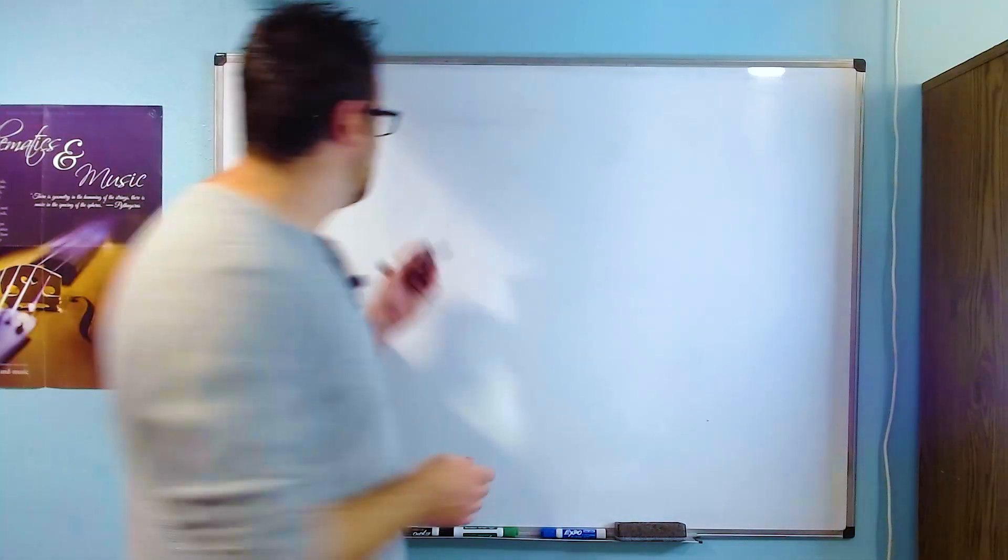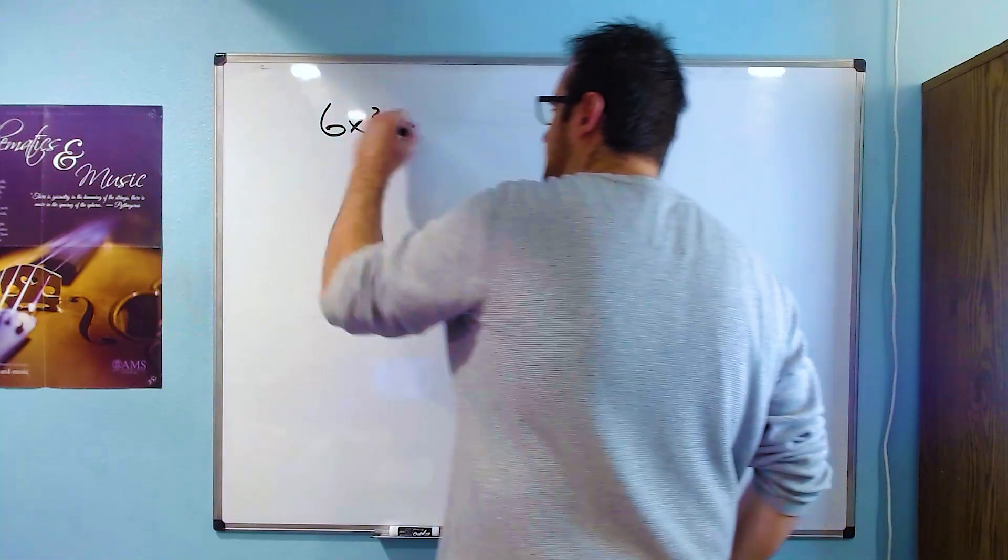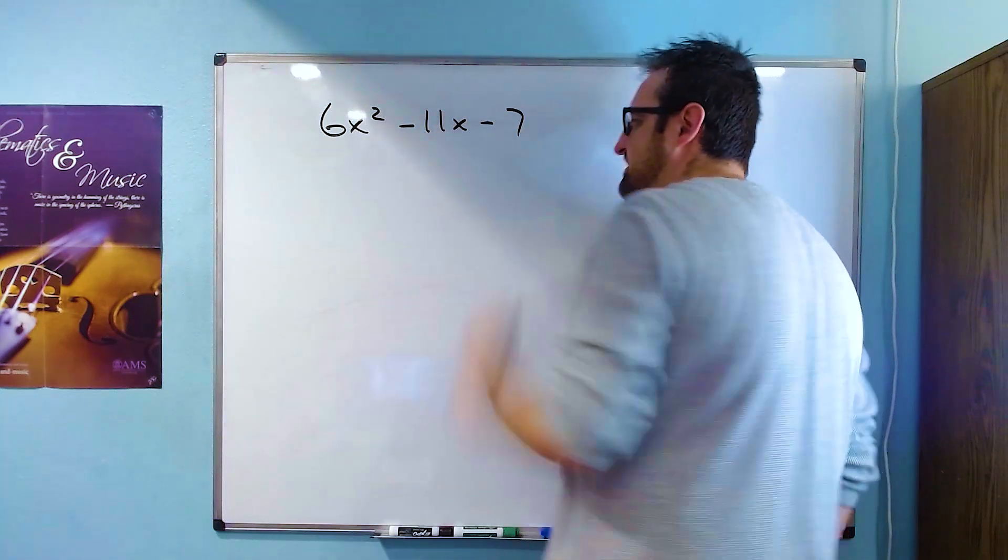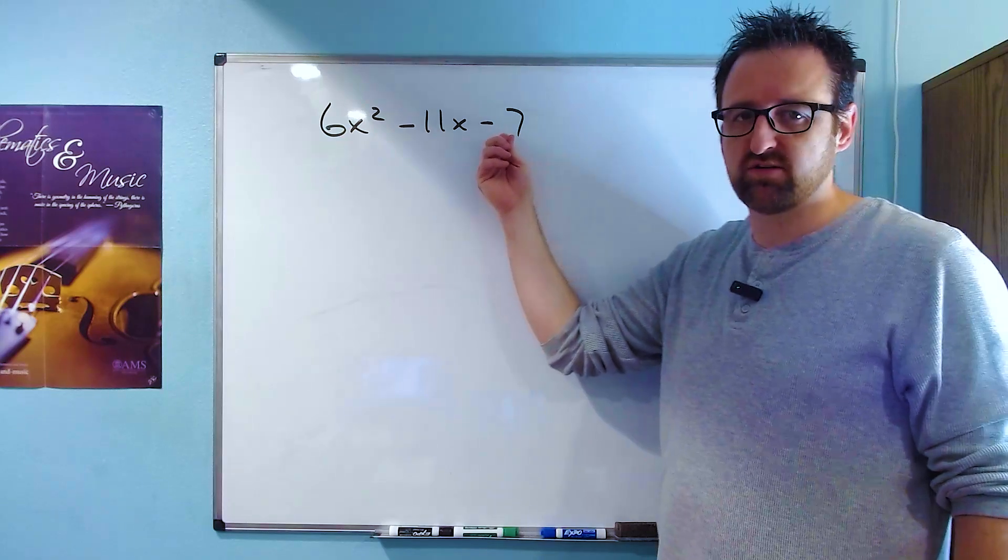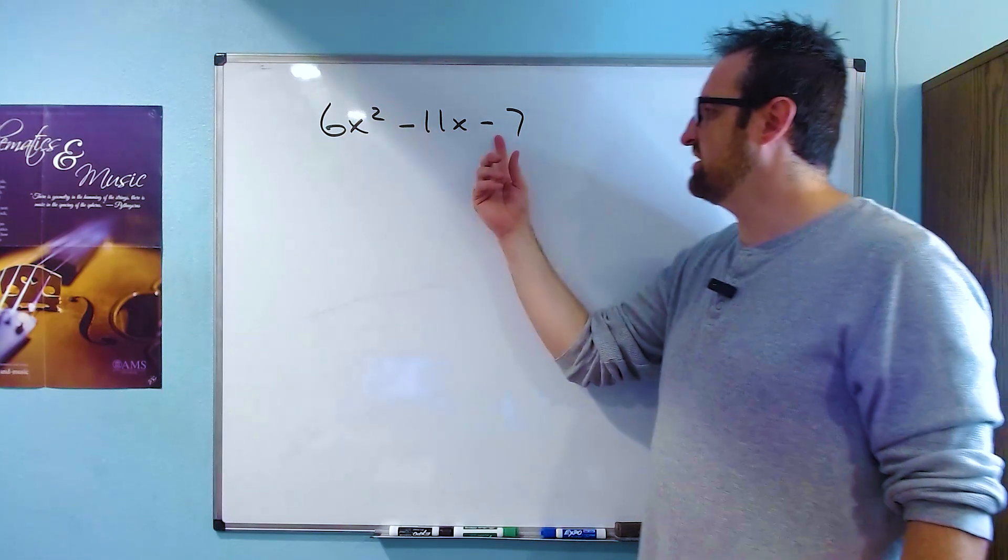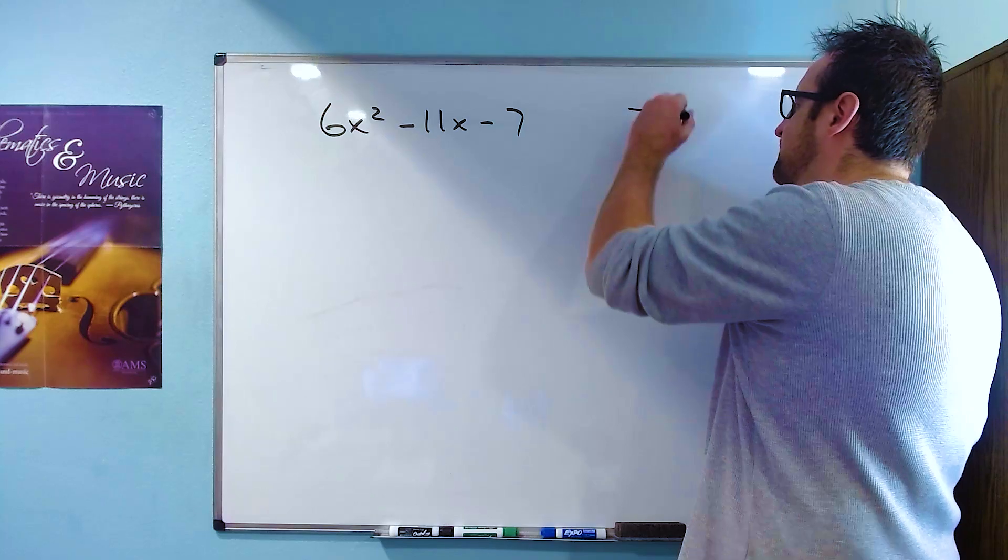Okay, our second example is 6x squared minus 11x minus 7. So following the same method we've been doing, we look at the first coefficient and the last coefficient, including their sign. 6 times negative 7 gives me negative 42.